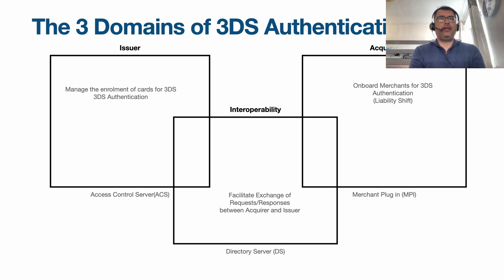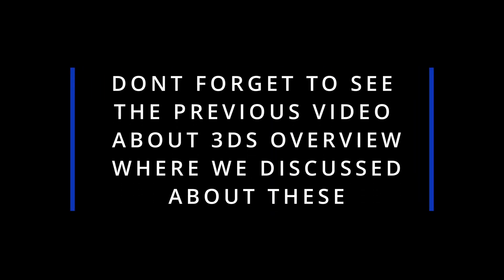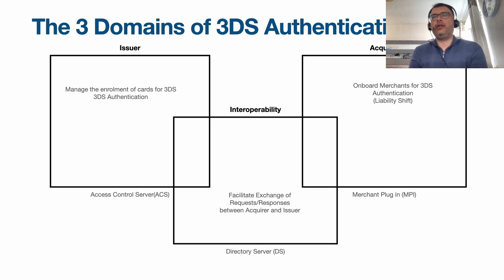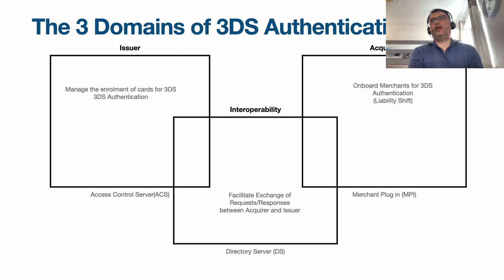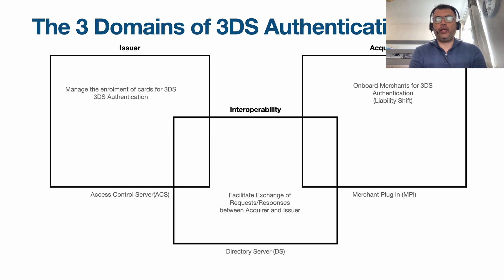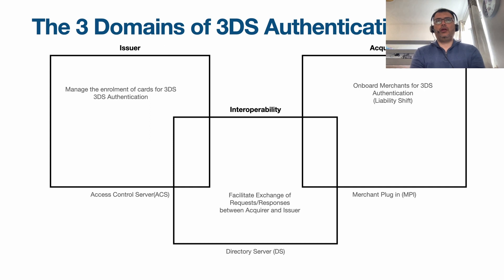The issuer domain covers things like how the enrollment of cards works and how 3DS authentication will function on the issuing side. The acquirer domain covers how merchants get onboarded for 3DS authentication. The interoperability domain is on the networking side — entities like Visa and Mastercard facilitate and exchange requests and responses between the acquiring side and the issuing side.